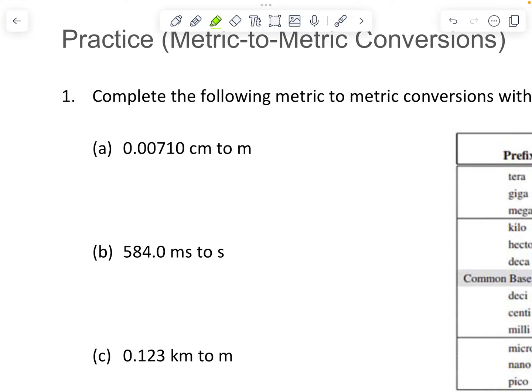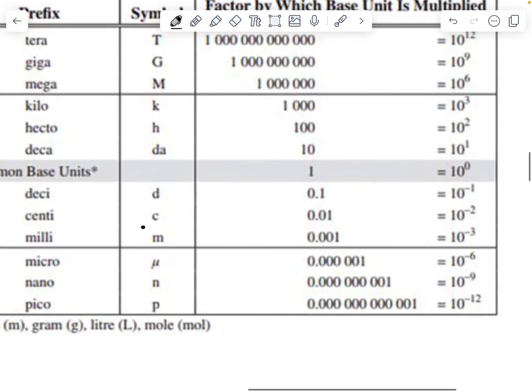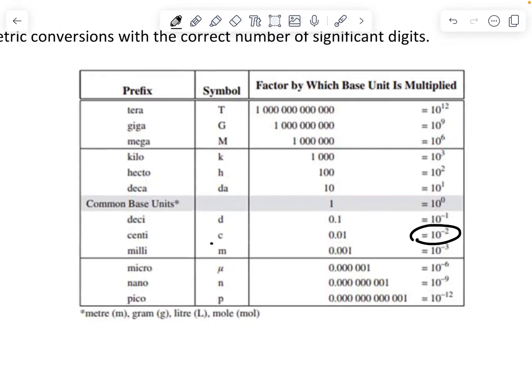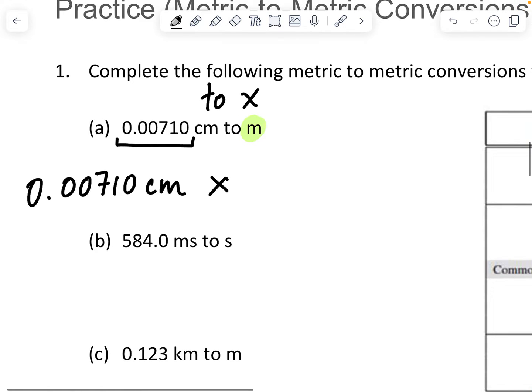So an example of this is on this page. So if I'm going from centimeters to meters, in this case, I am going to the base unit. I'm going to multiply. So I take the number that's given to me, 0.00710 centimeters. And I'm going to multiply by centis are 10 to the minus 2. So I'm going to multiply by 10 to the minus 2. And this is going to give me 0.0000710 meters.